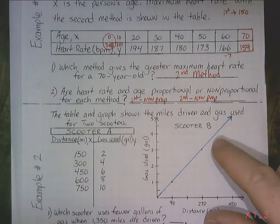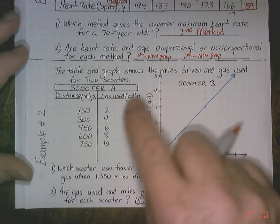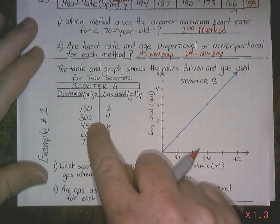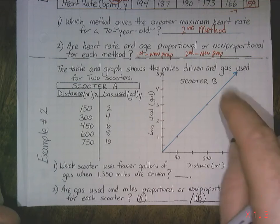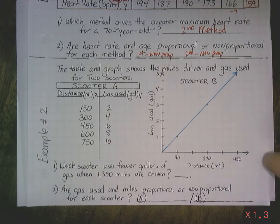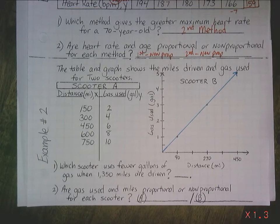Example 2. The table and graphs shows the miles driven and the gas used for two scooters. So you've got scooter A in a little chart or table, if you will, going up and down. And you've got scooter B represented in a graph. I personally like graphs because it's easier to see, easier to kind of interpret.